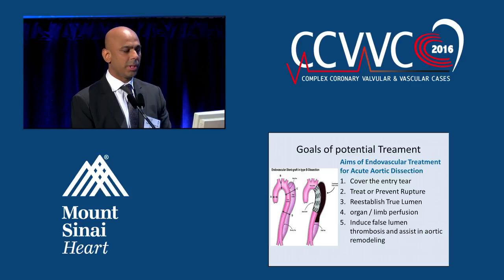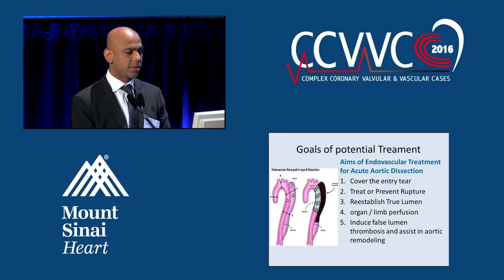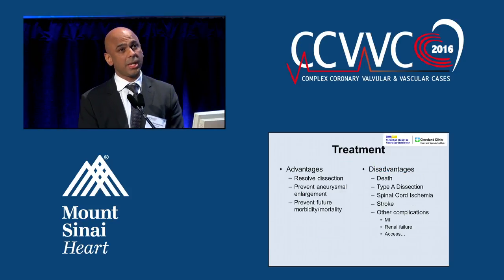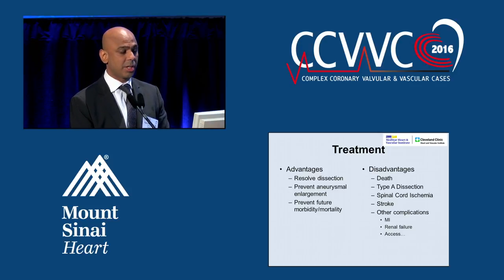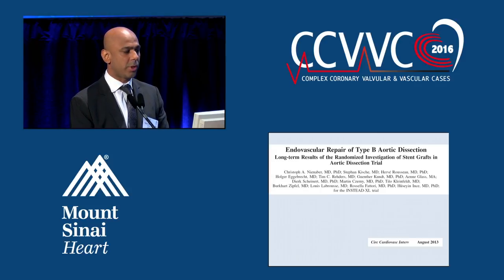The goal of treating this is to cover the entry tear, prevent rupture, reestablish the true lumen, and help aortic remodeling. Unfortunately, there are disadvantages to endovascular treatment for type B: you can develop a type A dissection, which could be life-threatening, and you can develop spinal cord ischemia, with a quoted risk of about 10 to 15% — it depends on the amount of aorta you cover.